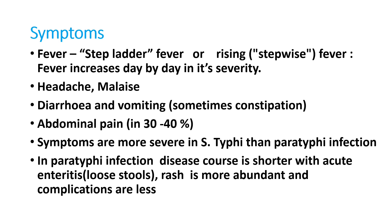Other symptoms are headache, weakness, and some patients can have diarrhea and vomiting. Diarrhea is mainly seen in Salmonella paratyphi but can also occur in typhi. Abdominal pain is seen in many patients. Symptoms are more severe in typhi than paratyphi; paratyphi infections have slightly lower disease intensity, and diarrhea is more prominent in paratyphi infections.